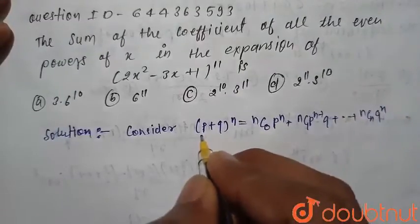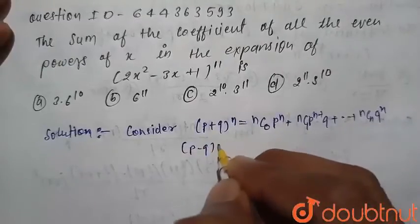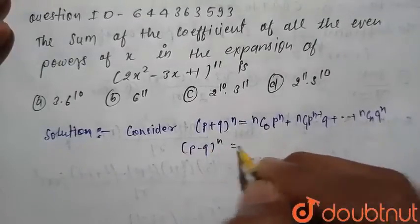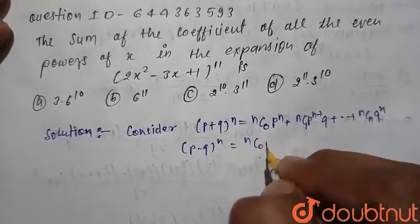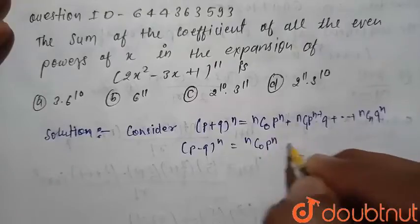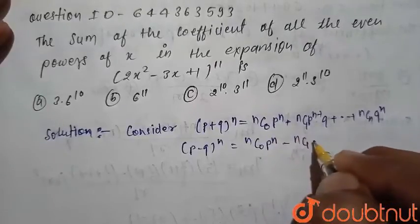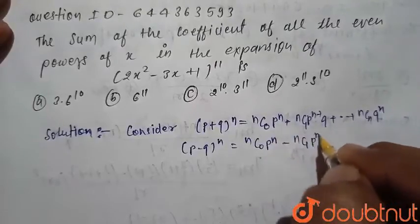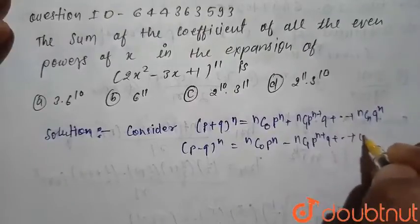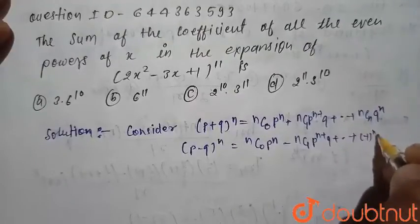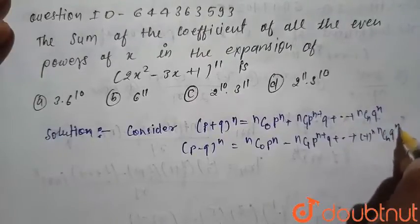If we write (p − q) raised to the power n, then this equals nC0 · p^n − nC1 · p^(n−1) · q, and so on till (−1)^n · nCn · q^n.